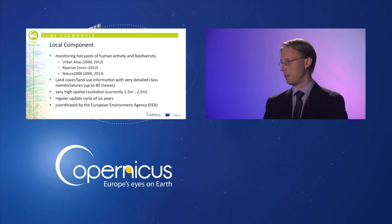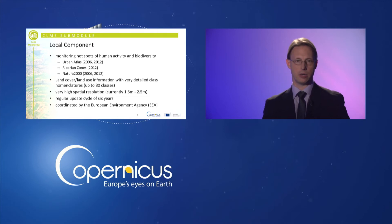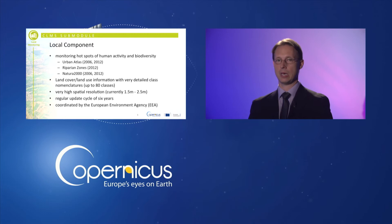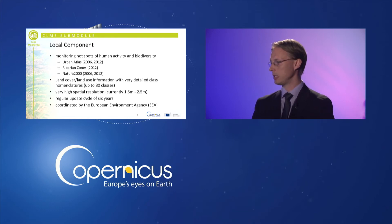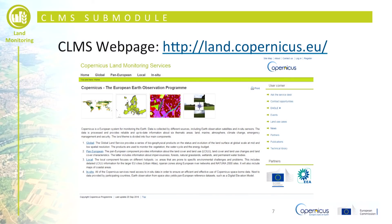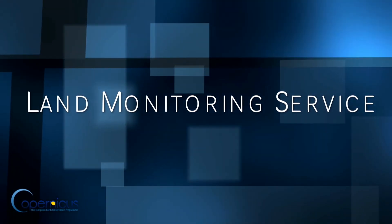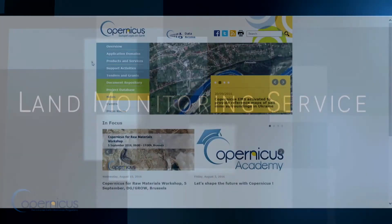All local component products provide vector data of land use and land cover with a minimum mapping unit of half a hectare. Their nomenclatures vary in depth but provide up to 80 different thematic classes at very high spatial resolution — between one and a half and two and a half meters — with a regular update cycle of typically six years. All these products are made available by the European Environment Agency via the Copernicus Land Monitoring Service webpage, with access via viewing services, download services, and web map services.